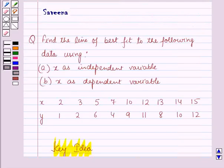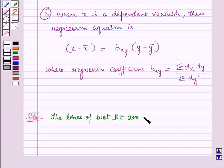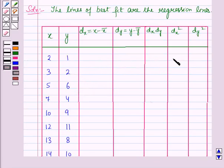Now we have to find the line of best fit to the given data. The lines of best fit are the regression lines. To determine the regression lines, first of all we will form a table for the given data.